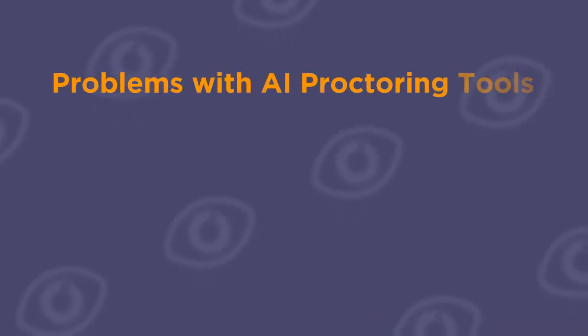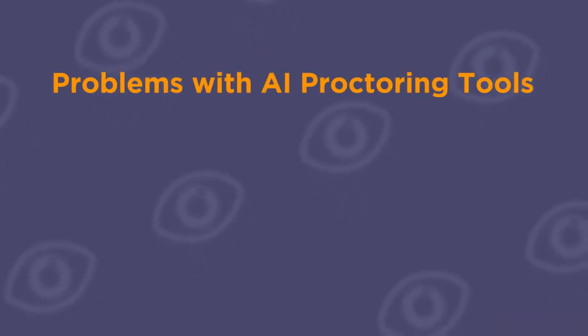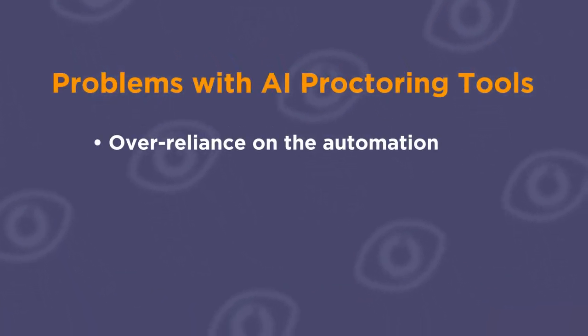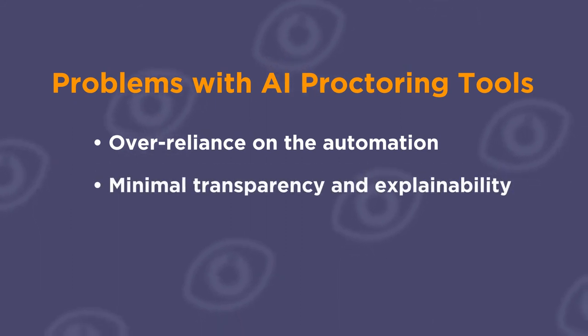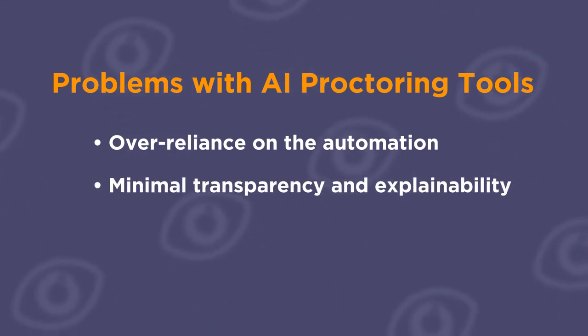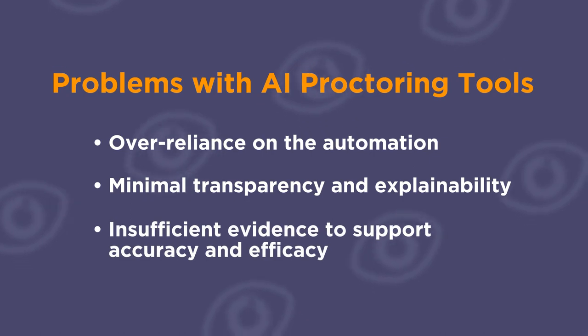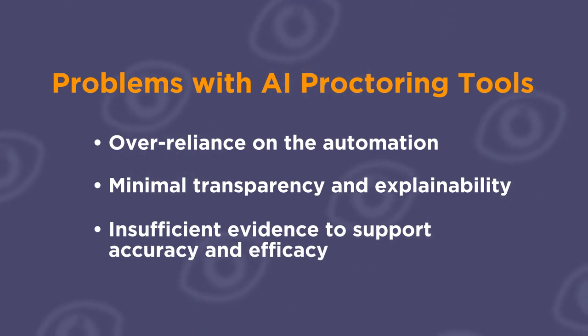And the main problems with these are over-reliance on the automation, minimal transparency and explainability, and in some cases insufficient evidence supporting their accuracy and efficacy — both overall and across marginalized populations.